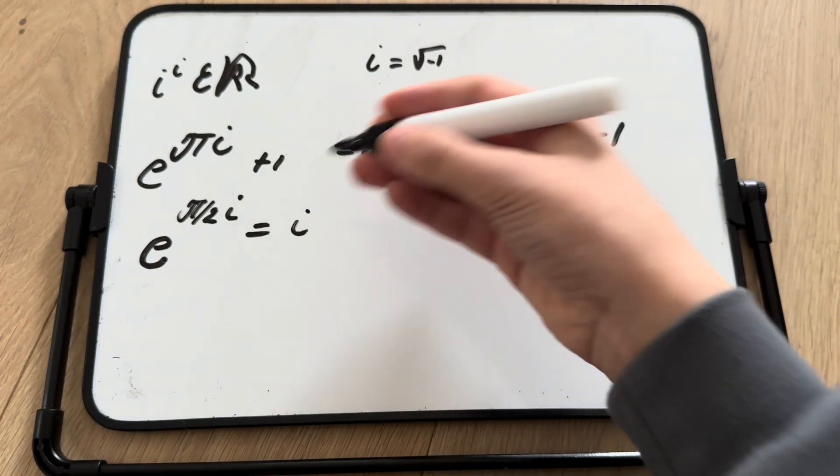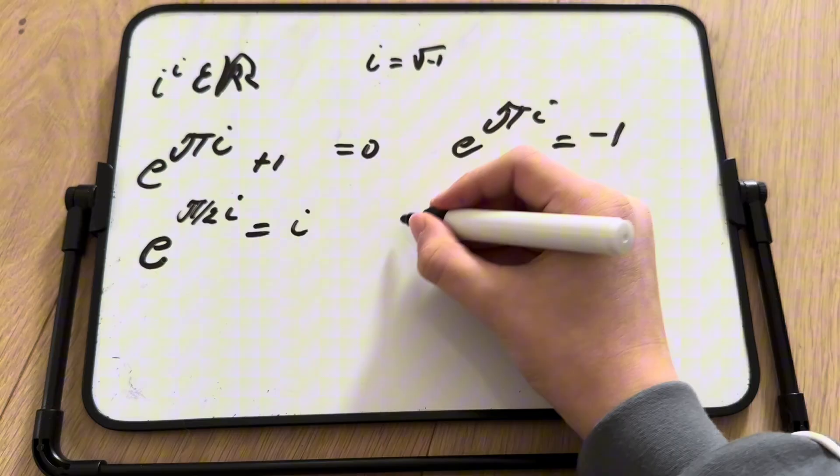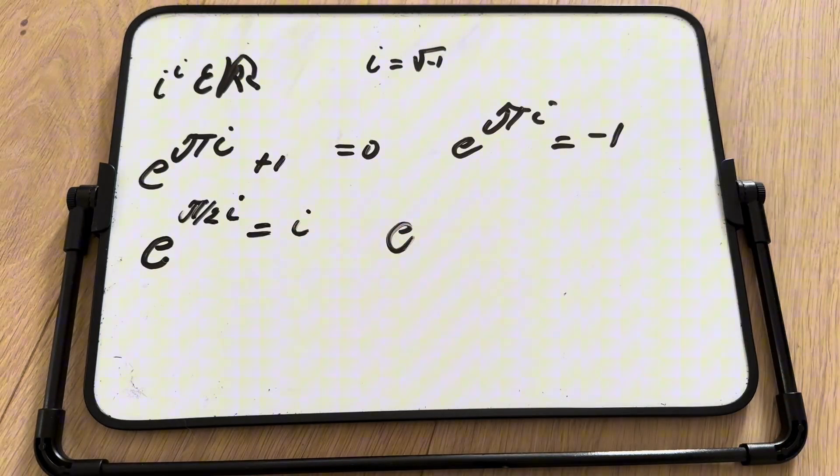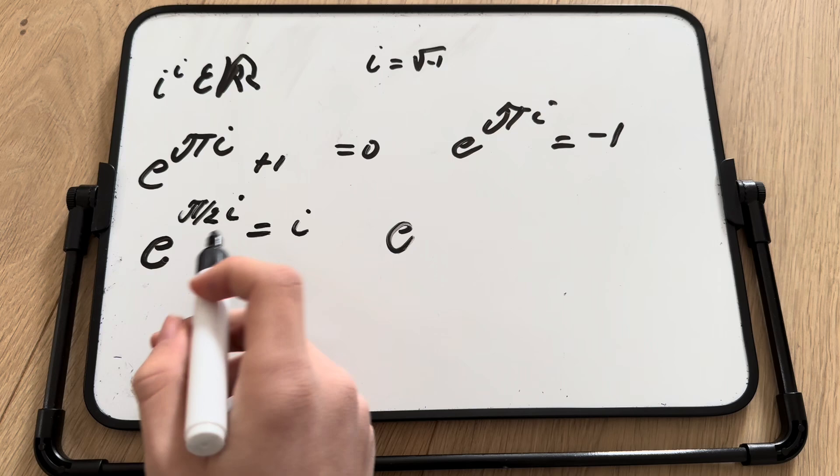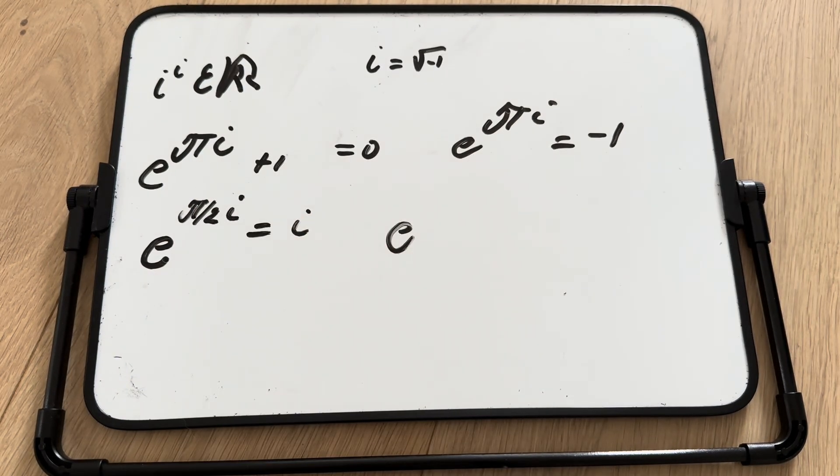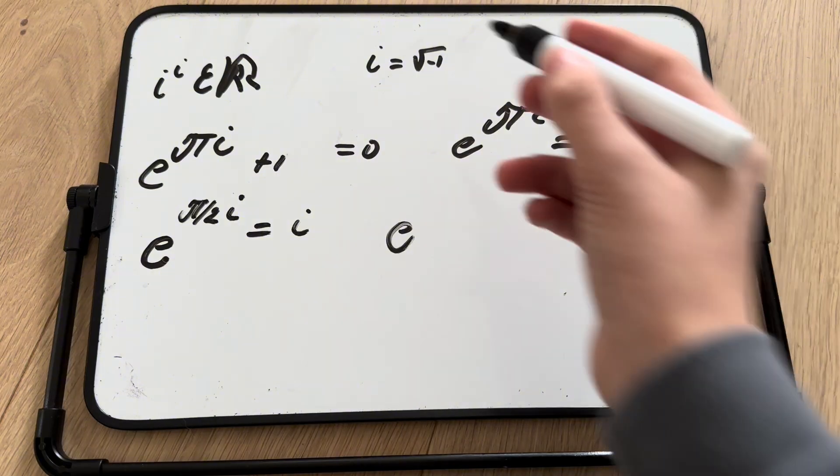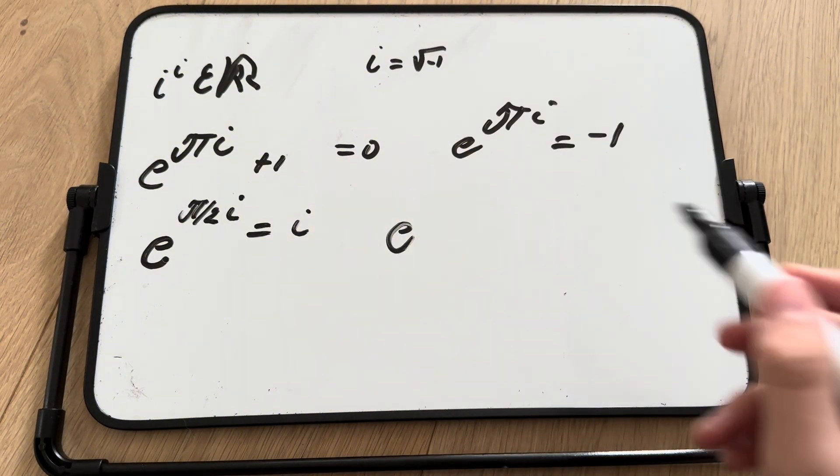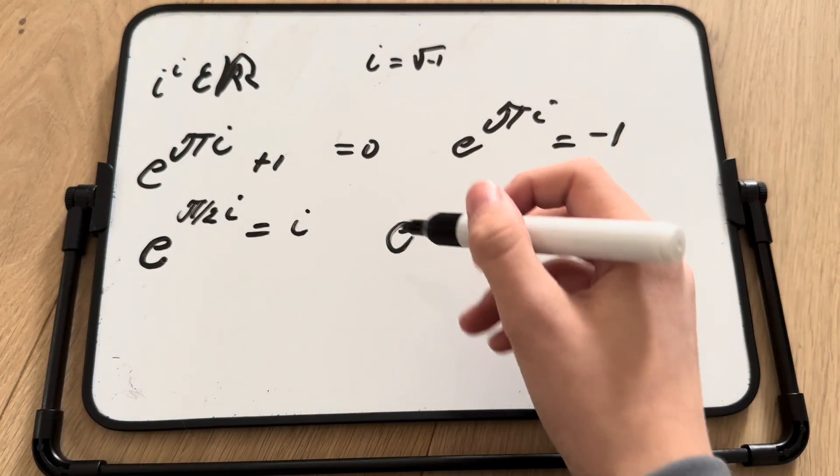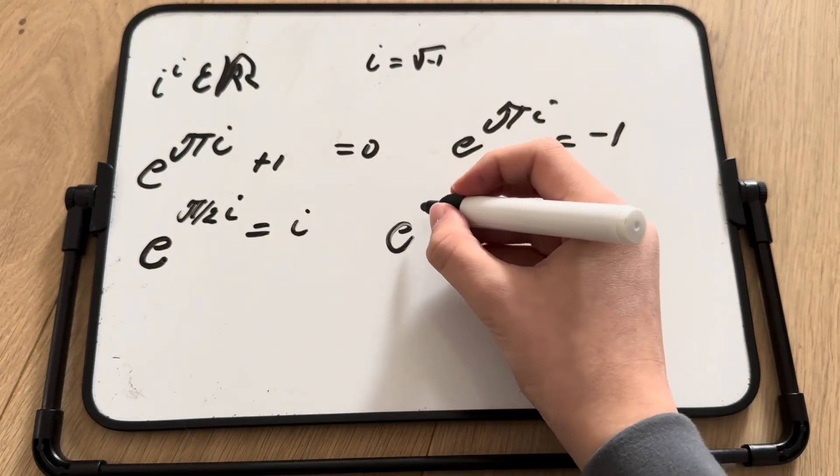And we just raise both to the i. And if you remember, i to the i, sorry, i times i, since we're raising both to the i, so we multiply indices, is just negative 1. Why? Because the square roots cancel out, so we just get negative 1. That's the same as square root of negative 1 squared, which is just negative 1.